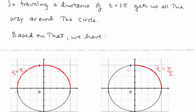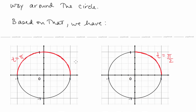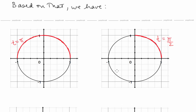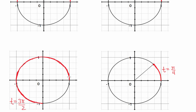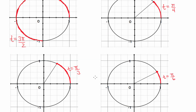Based on that, we have other important values of t. Going halfway around the circle is t equals π, a quarter of the way around is t equals π/2, three quarters of the way around is 3π/2. An eighth of the way around — which is one quarter of the way around the top half — is π/4. If we divide the top half into three parts, a third of the way around the top is π/3, and a sixth of the way around is π/6.